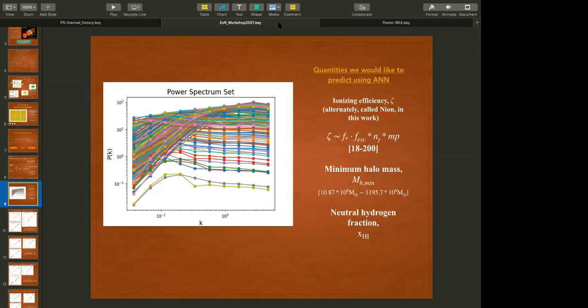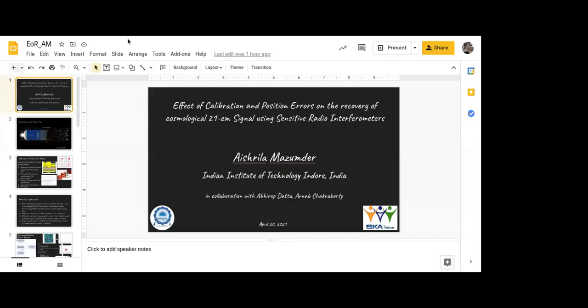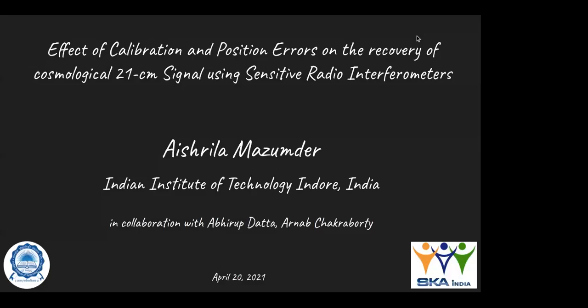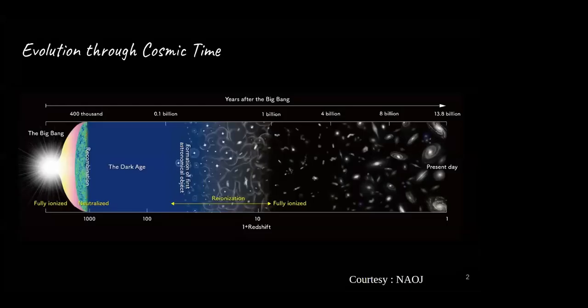Let's move to the next talk, the last of the session. The next speaker is Aishrila Majumdar from IIT Indore. Aishrila will be talking about the effect of calibration and position errors on the recovery of the cosmological 21-centimeter signal using sensitive interferometers. This work was done in collaboration with the OB group.